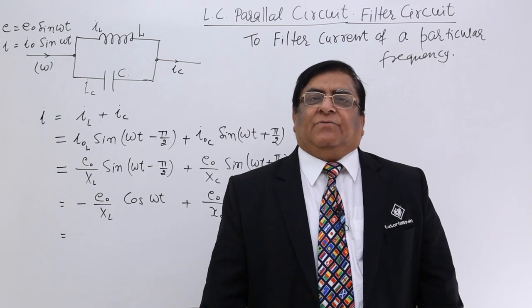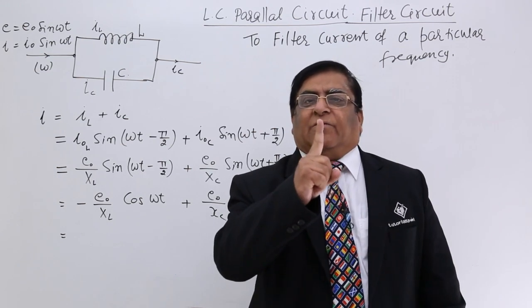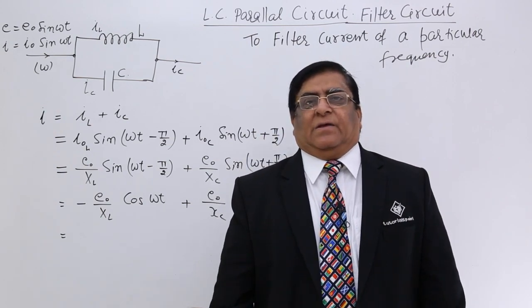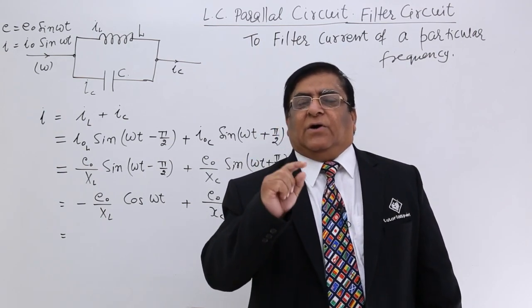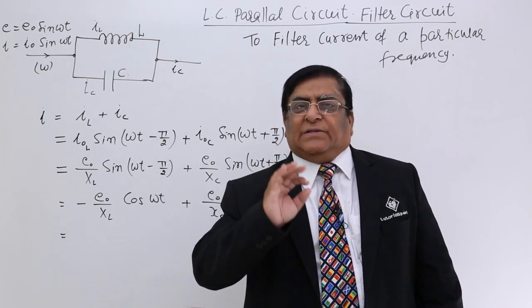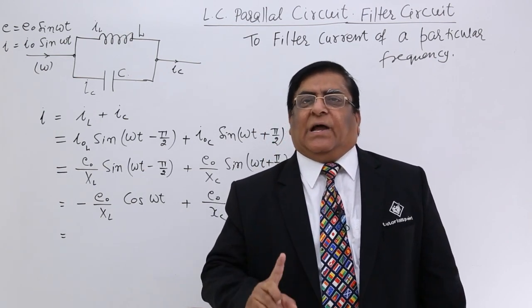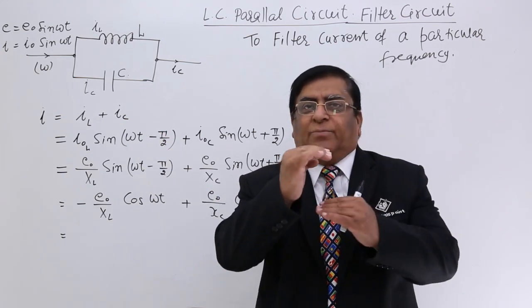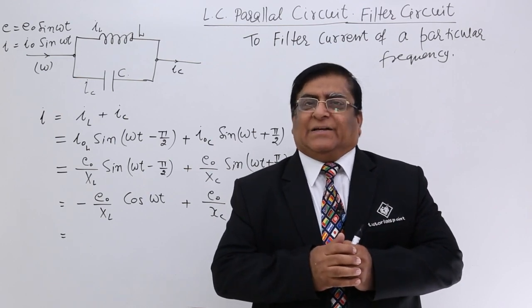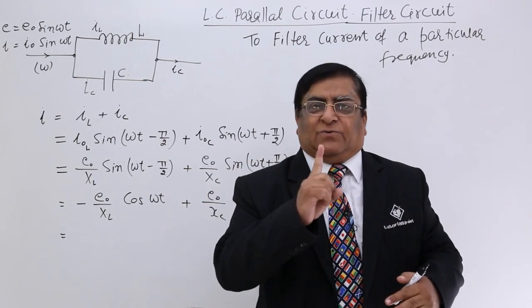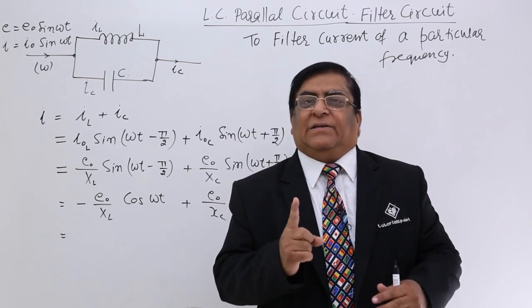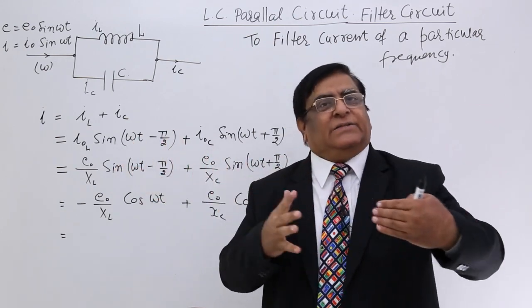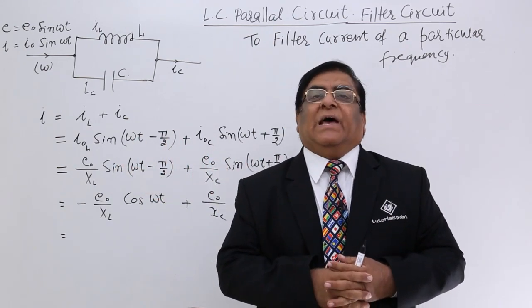Out of that we want to reject one particular sound which has got a particular frequency. We want that that sound or that signal should stop, that should be filtered out and rest all the frequencies should come as it is. So it is a reverse job of selector circuit. In selector we reject all, select one. In this circuit I will call it a filter circuit. We reject one frequency and select all others to come. This is action of filter.